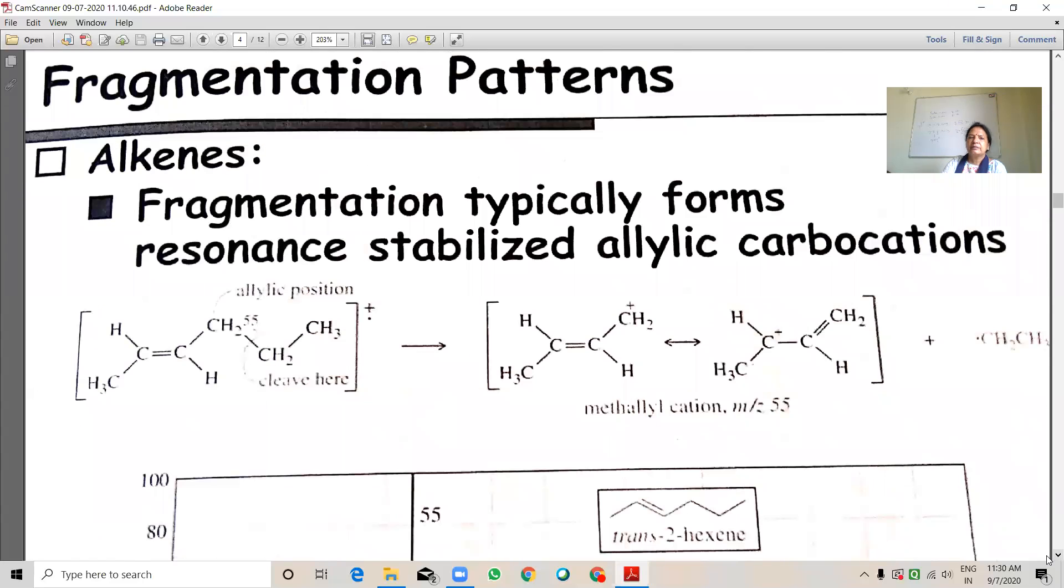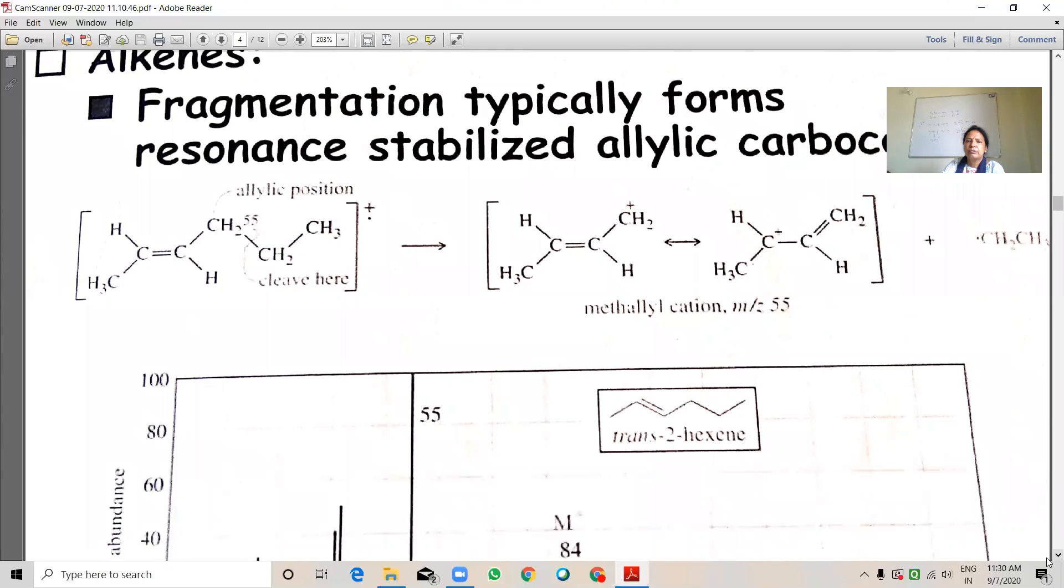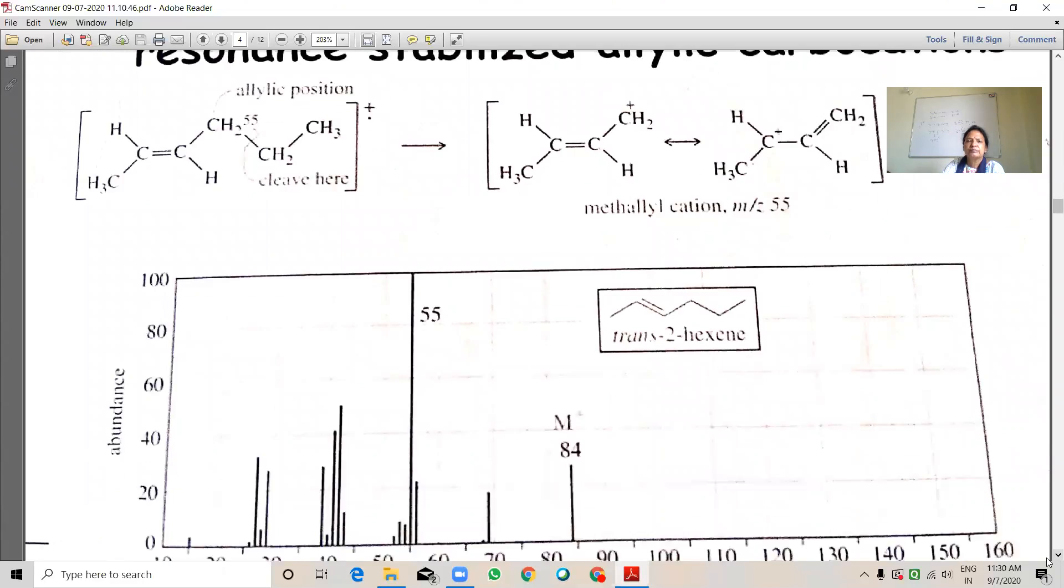Alkenes. In alkenes, see the fragmentation pattern. It is trans-2-hexene. Here also, this peak is alkenes. At m/z 55, it is a base peak. Whereas, molecular ion peaks have low abundance.